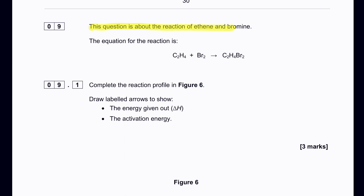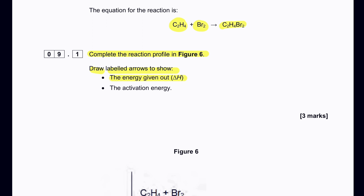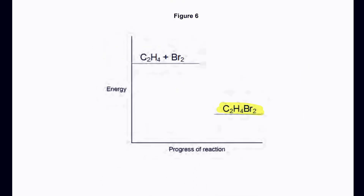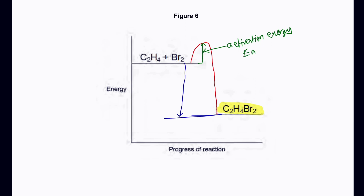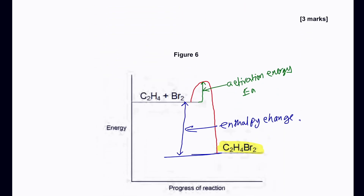Question nine is about the reaction between ethane and bromine, producing 1,2-dibromoethane. Copy the reaction profile diagram from figure six and add labeled arrows to show the activation energy (Ea) and the enthalpy change. The products have less energy than the reactants, so the enthalpy change arrow shows energy given out.